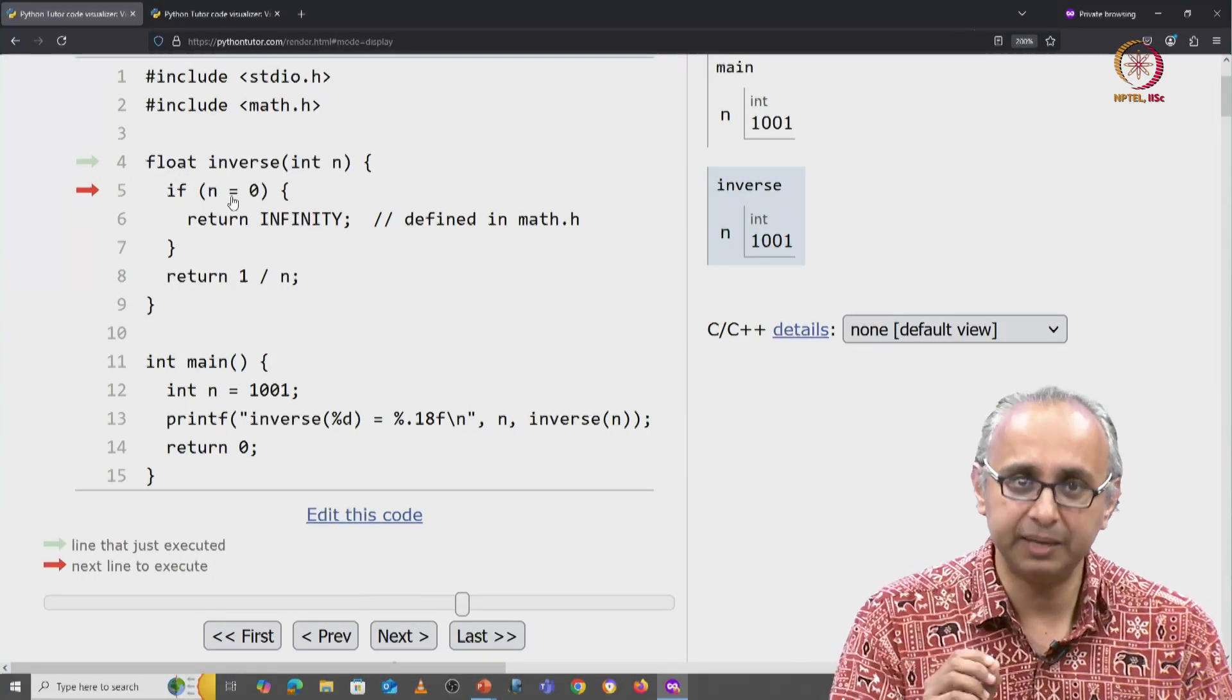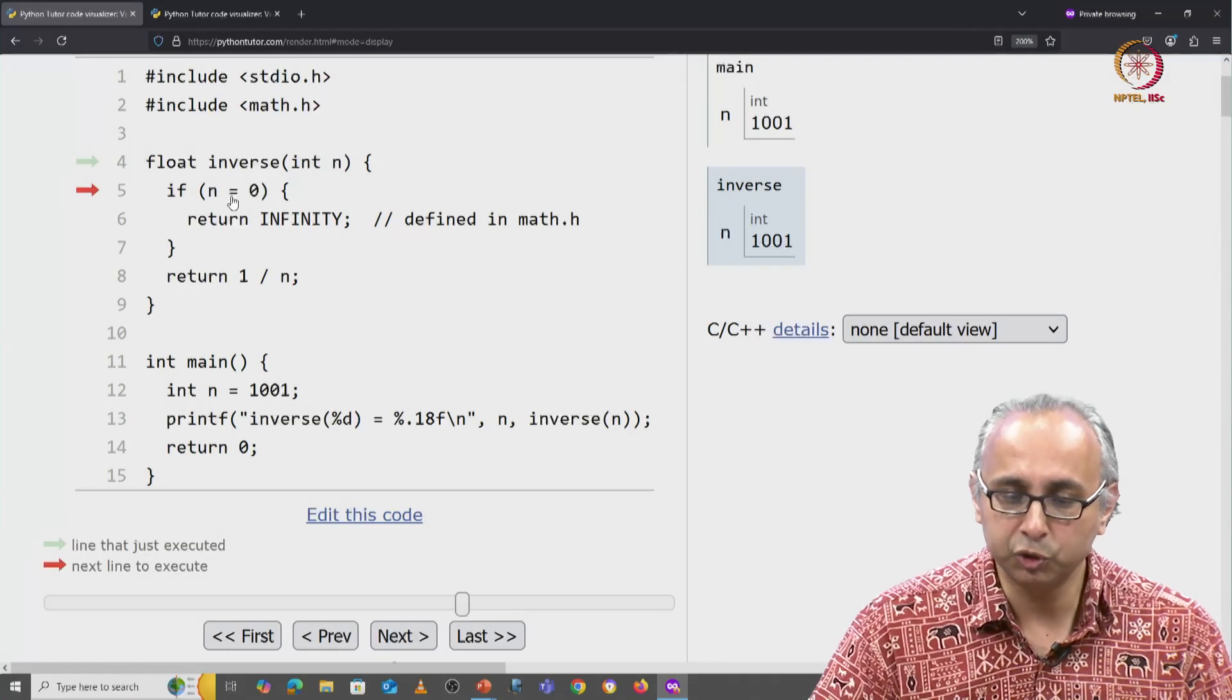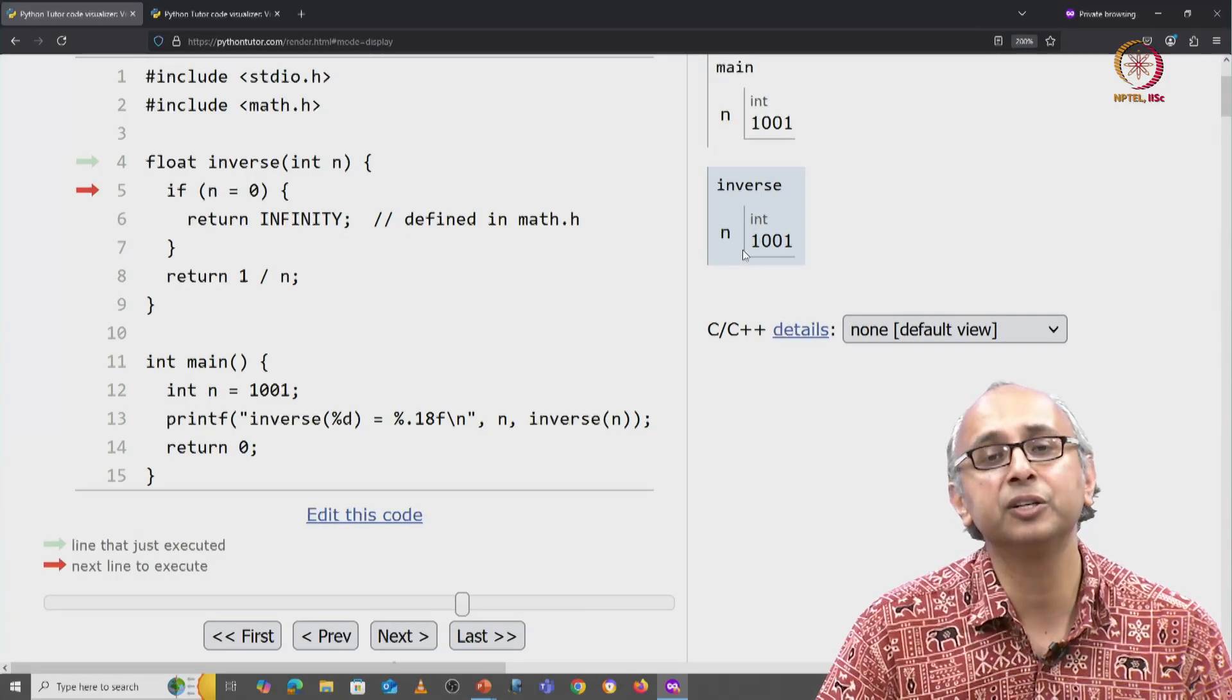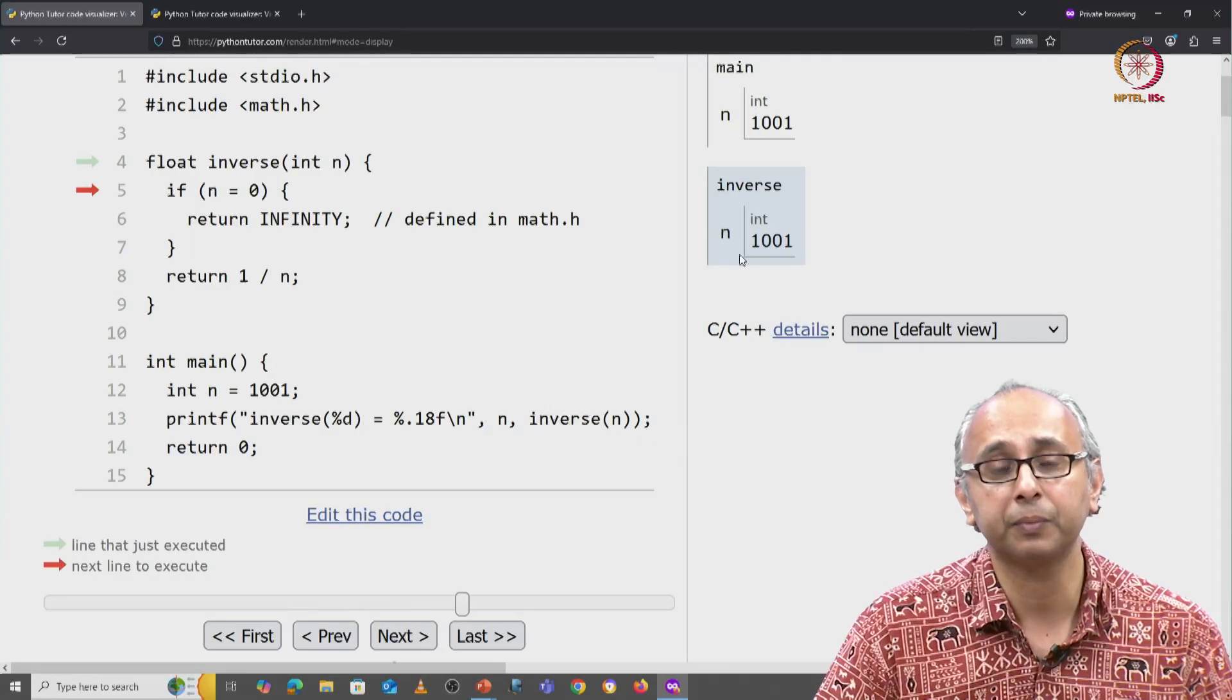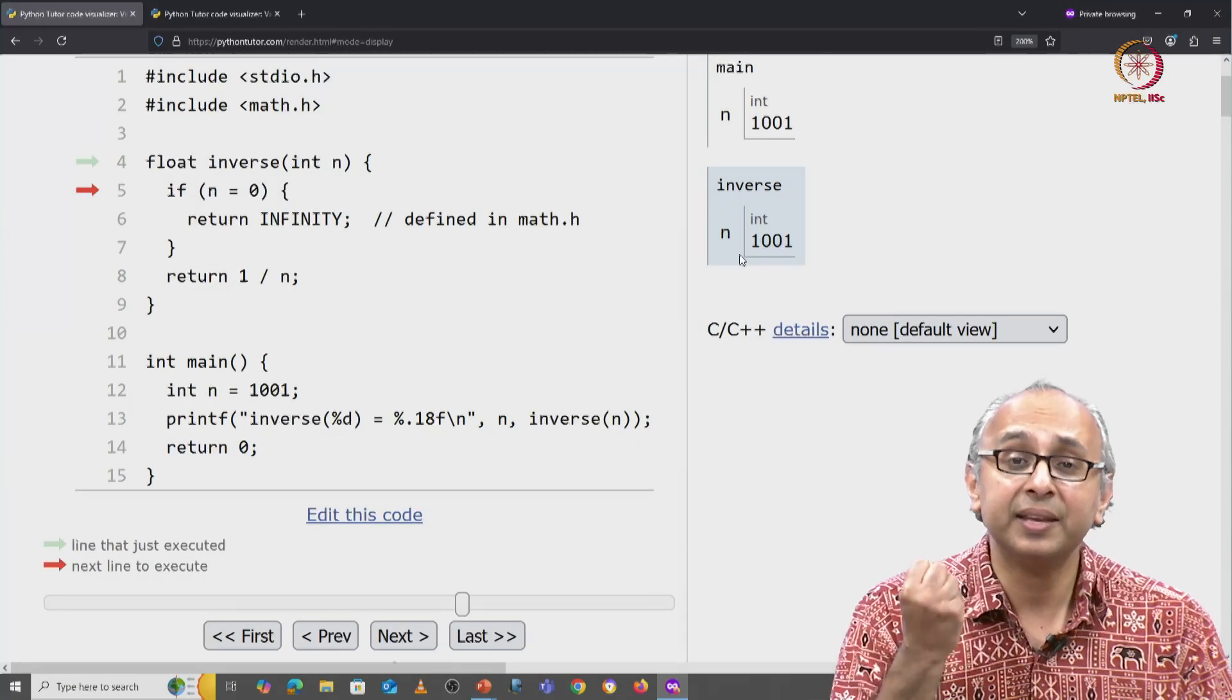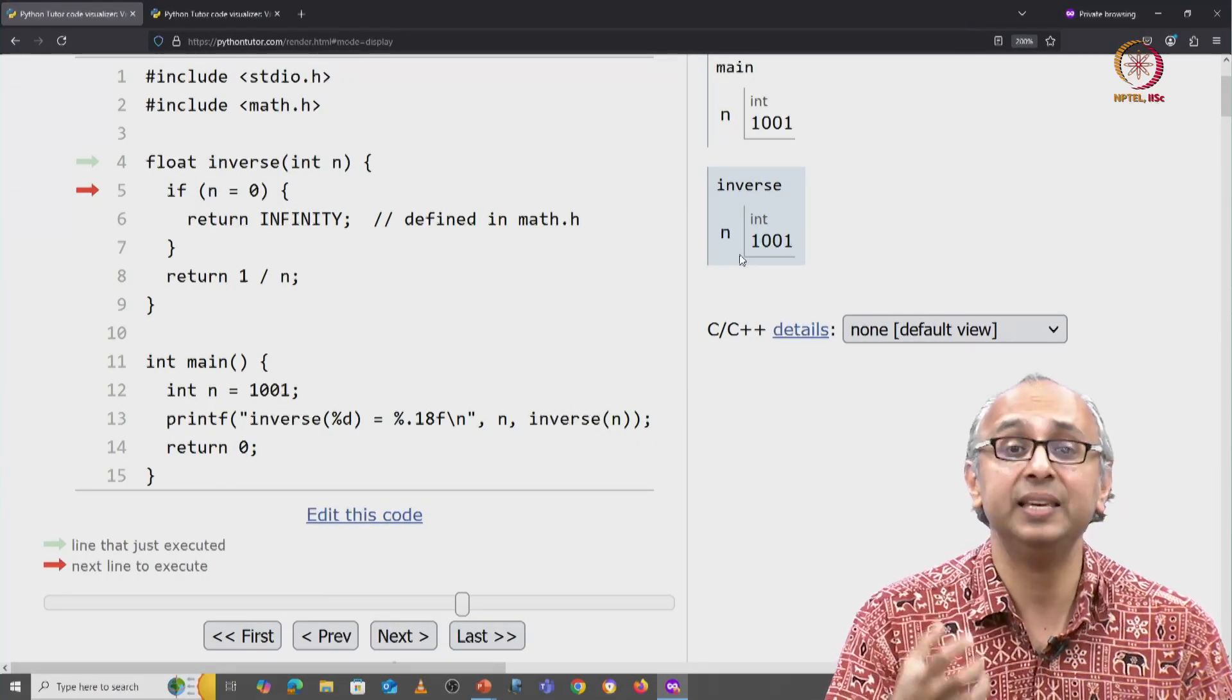Well remember it's an assignment statement. So, it's going to set this n to 0, not the one in main but this one in 0. But then an assignment statement in C is an expression.